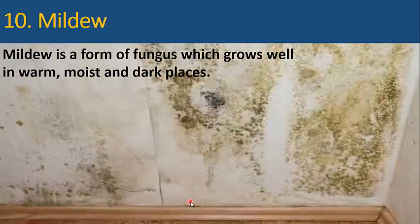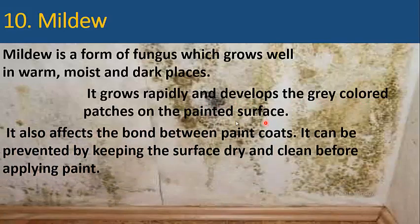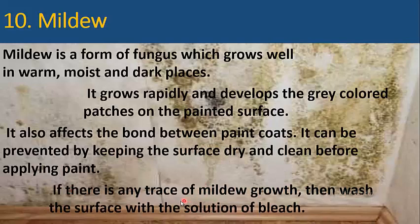Mildew is a form of fungus which grows well in warm, moist and dark places. It grows rapidly and develops gray colored patches on the painted surface. It also affects the bond between paint coats. It can be prevented by keeping the surface dry and clean before applying paint. If there is any trace of mildew growth, wash the surface with a solution of bleach.